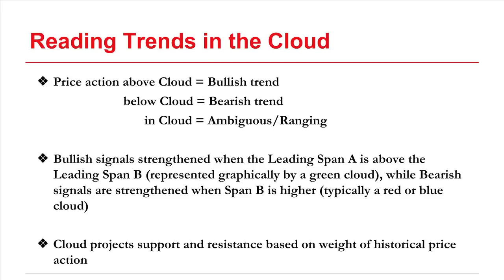The most obvious signals in Ichimoku come from the cloud. When price action is above the cloud — formed between the leading span A and B — it's a bullish trend. When price action is below, you have a bearish trend. When it's in the cloud, it's considered ambiguous or ranging.